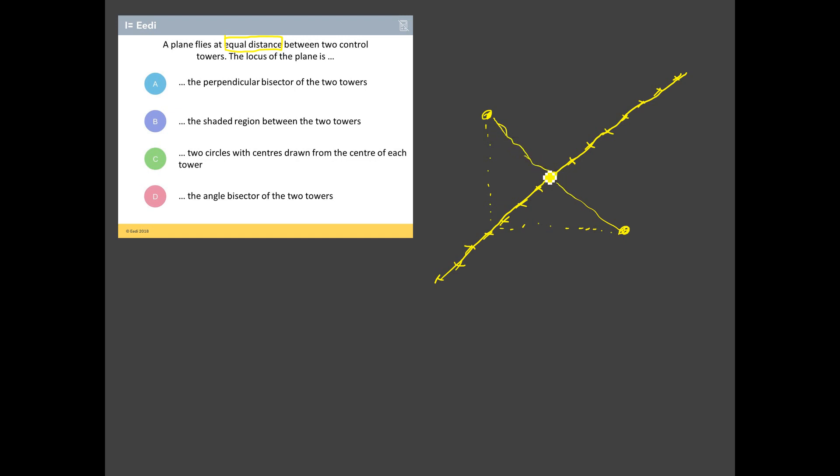And perpendicular means that it's at a right angle to this path that's in between them. So, if I just mark on this path between the two towers, that angle there is a right angle between. So, the perpendicular bisector splits the distance in half and then it gets a line that travels at a right angle to the original path between the two control towers. And so, I think A is the correct answer to this. It's worth just having a look at B, C and D just to see what the other ones are, just to make sure we're right here.